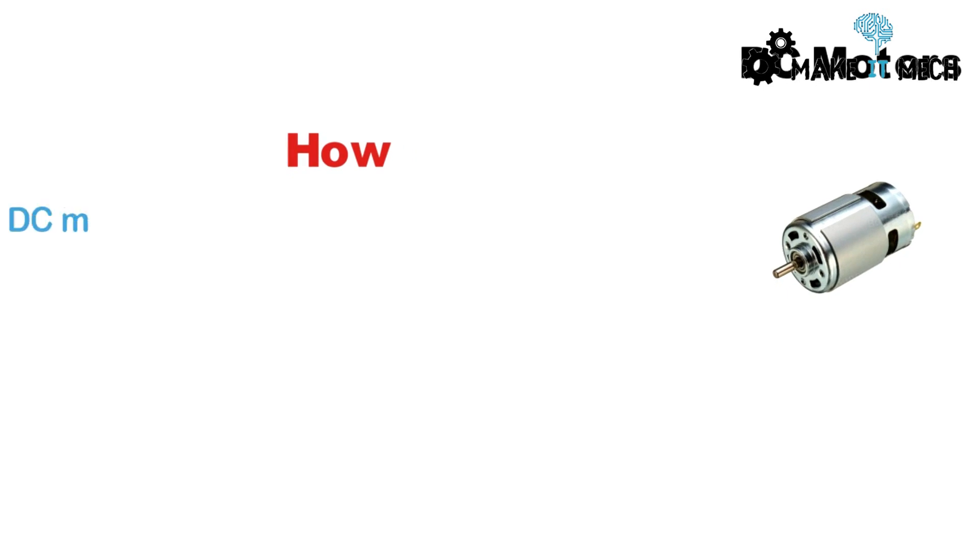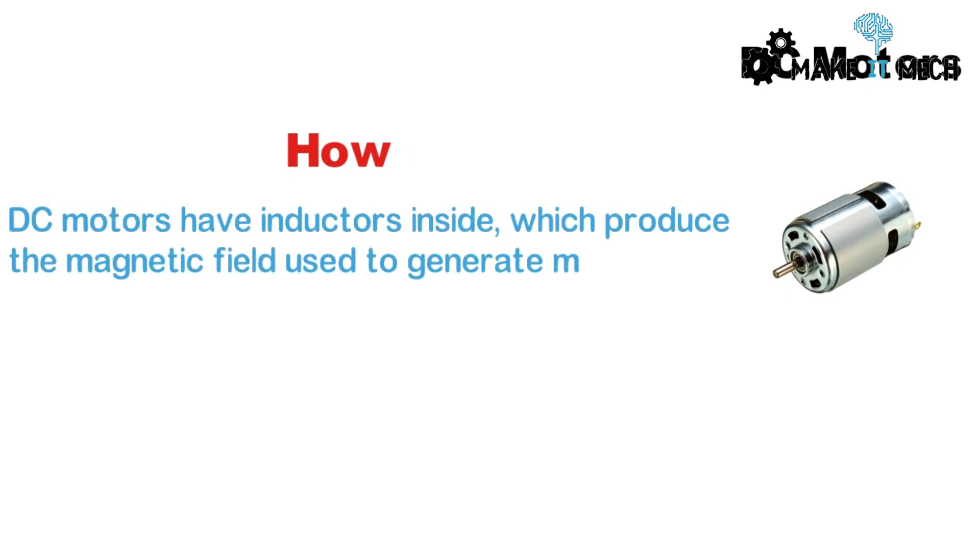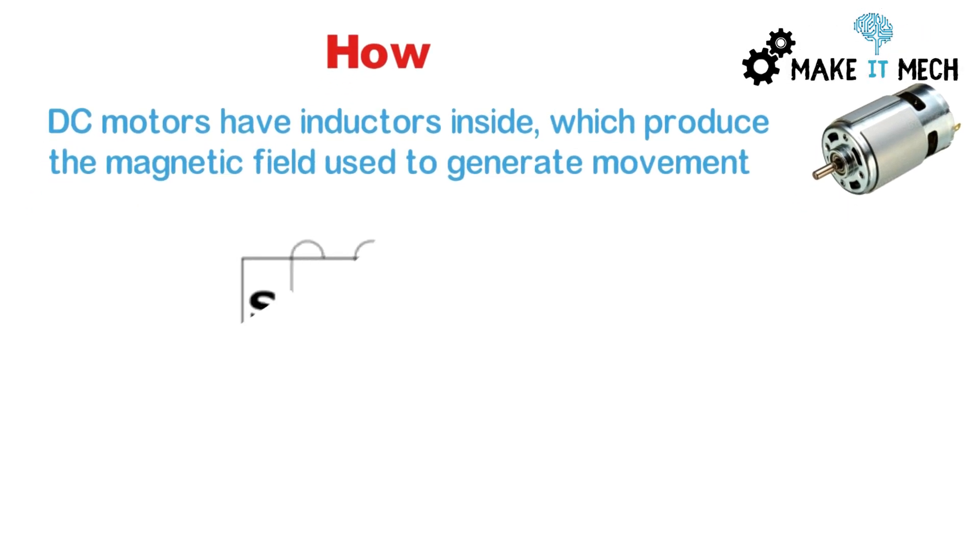How it works? To generate mechanical movements, DC motors have inductors inside that produce the magnetic field to generate rotations, or you can say the mechanical movements.